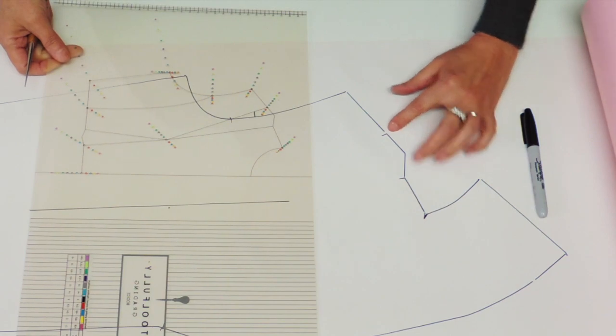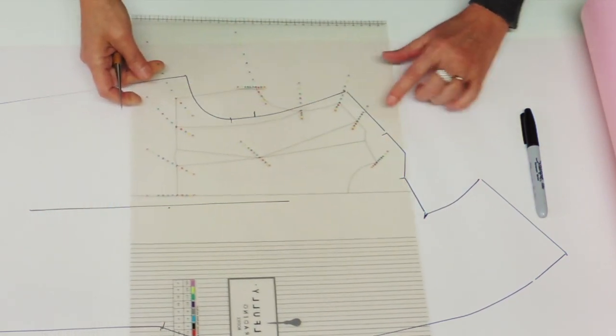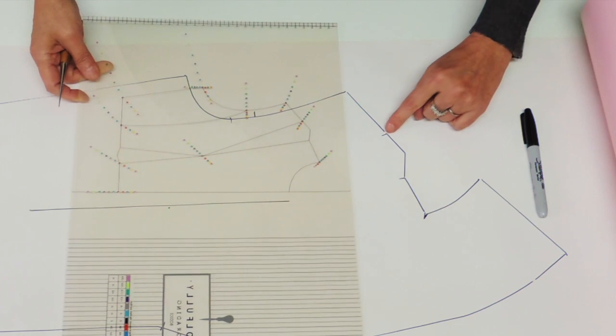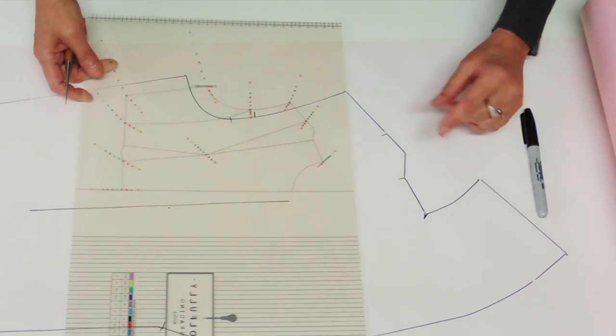Now this one has also the shoulder dart, so I'm going to use the shoulder dart point twice on both sides of the dart.